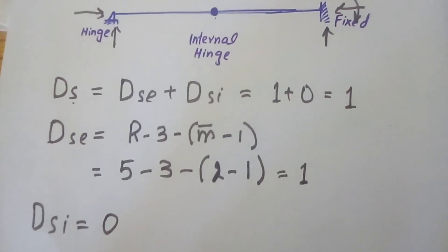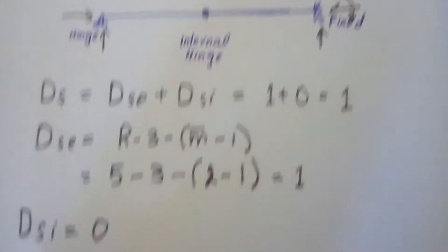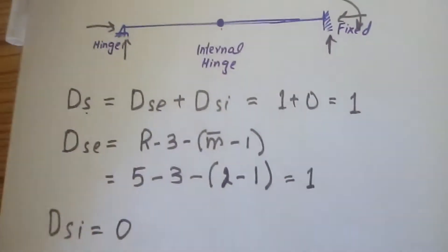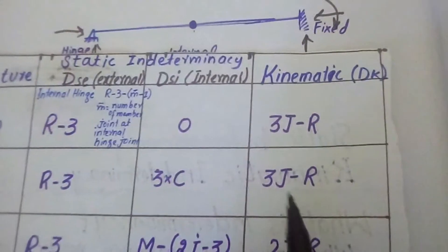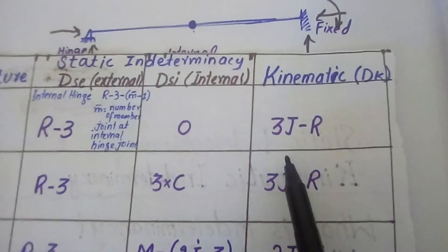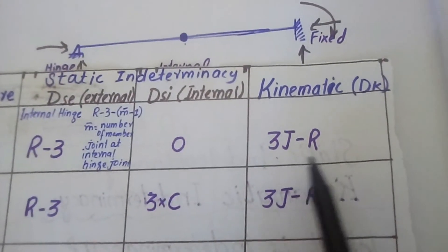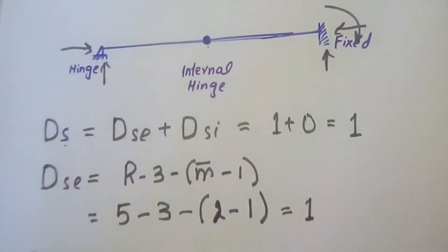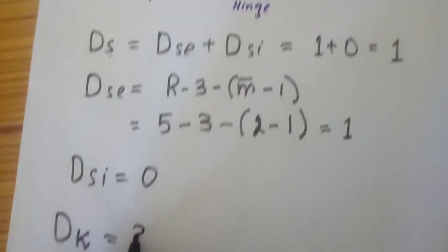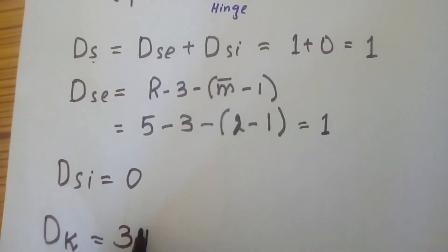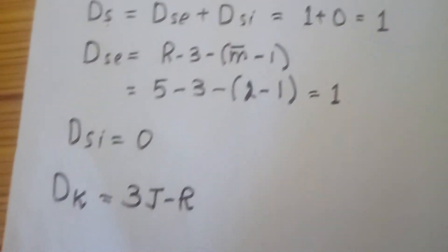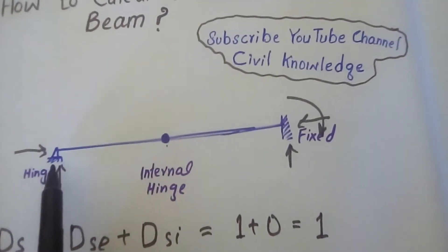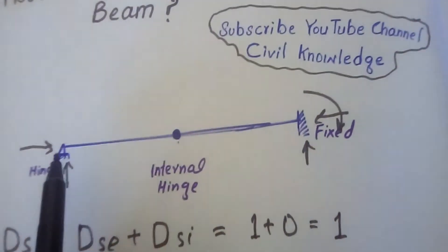Now we will move toward finding the kinematic indeterminacy for this beam. The formula for kinematic indeterminacy is 3J − R. So it is equal to 3J − R. The number of joints here is three — joint one, two, and three.